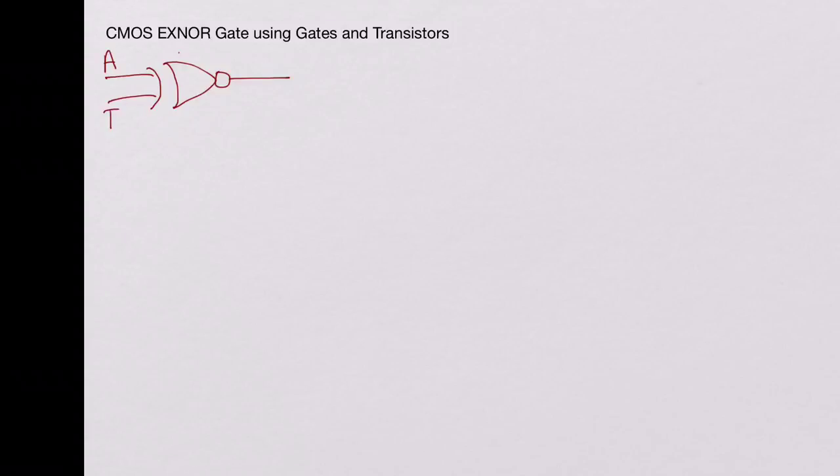Welcome to e-Know-How. In this video we will be looking at how to build a CMOS exclusive NOR gate using gates as well as transistors. Let's start with the symbolic view — the CMOS exclusive NOR gate is represented symbolically with two or more inputs; let's consider the two-input case where the output is Y.